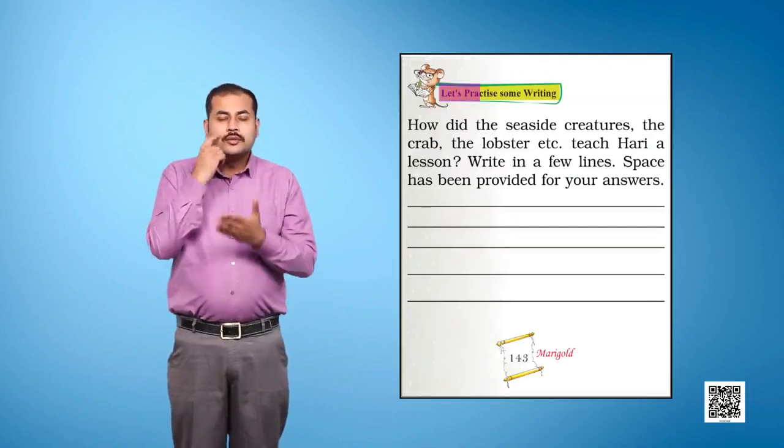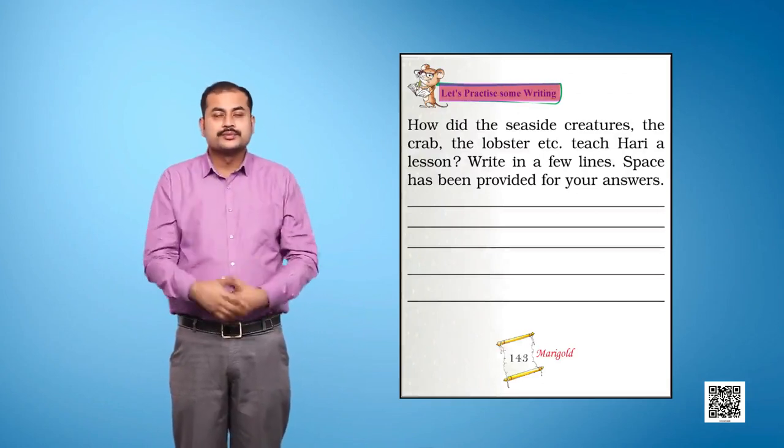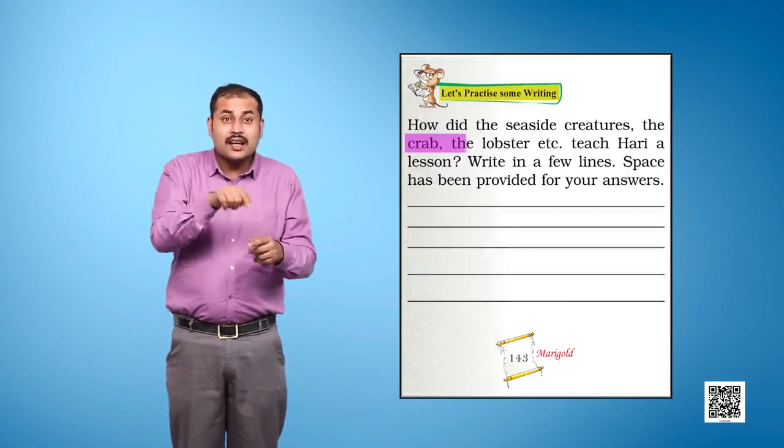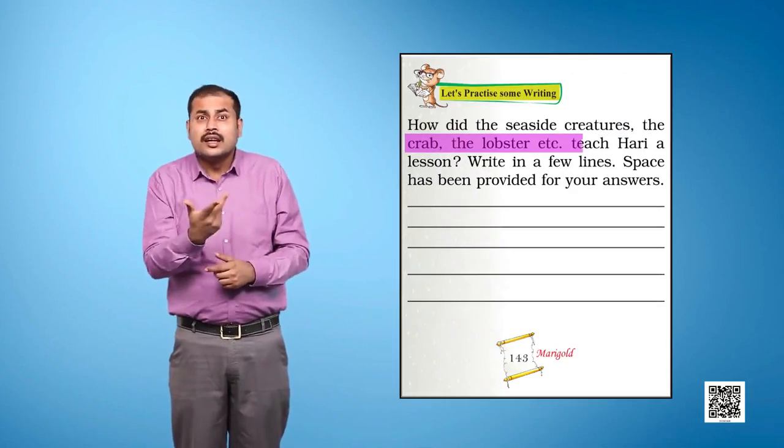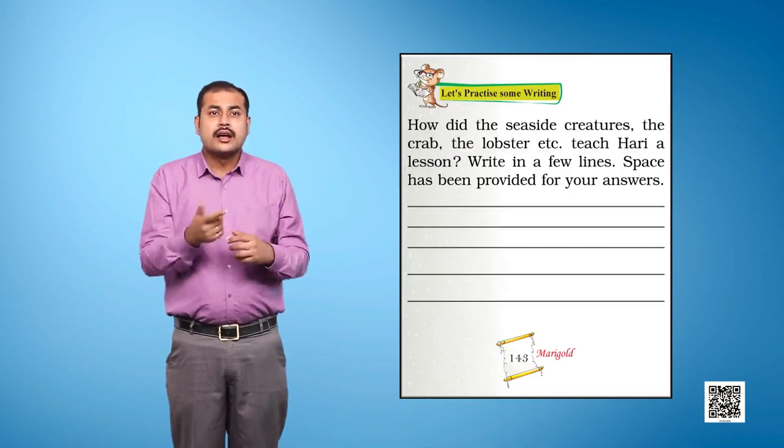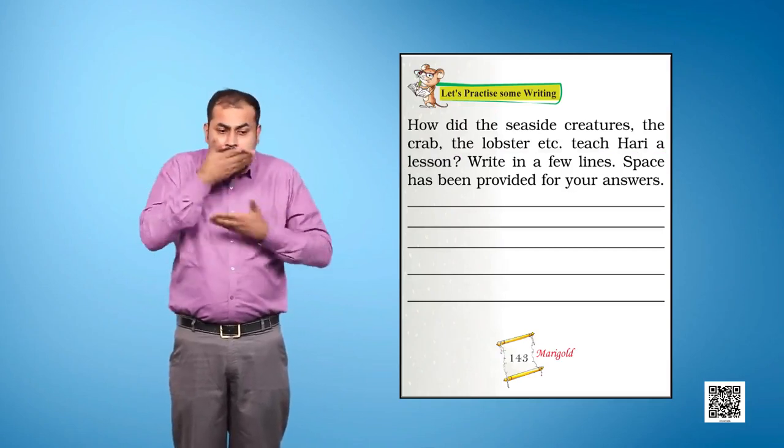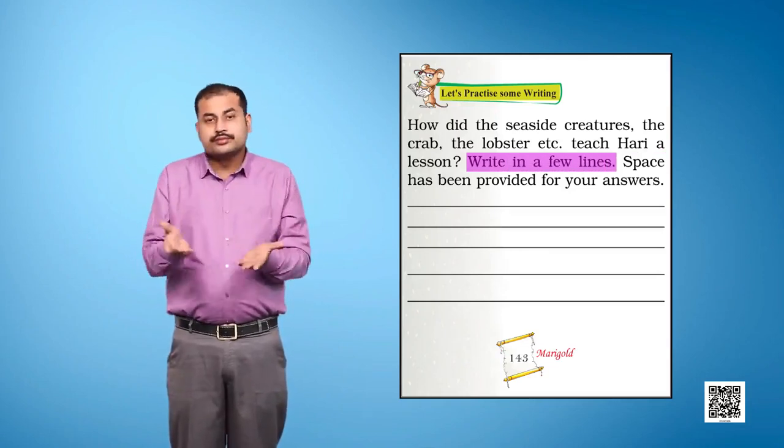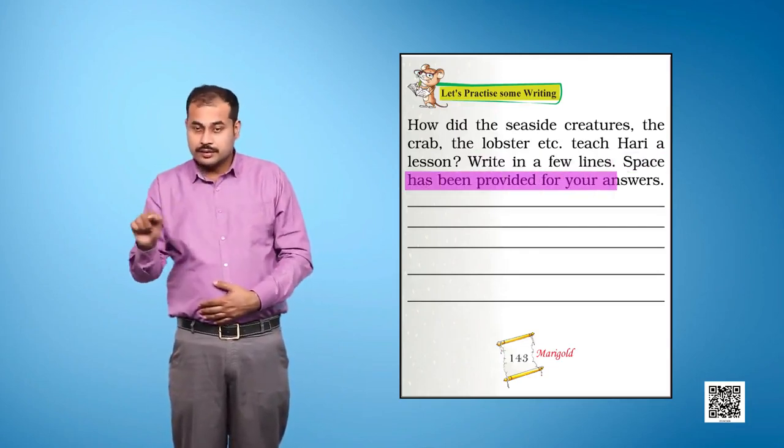Let's practice some writing. How did the seaside creatures, the crab, the lobster, etc., teach Hari a lesson? Write in a few lines. Space has been provided for your answer.